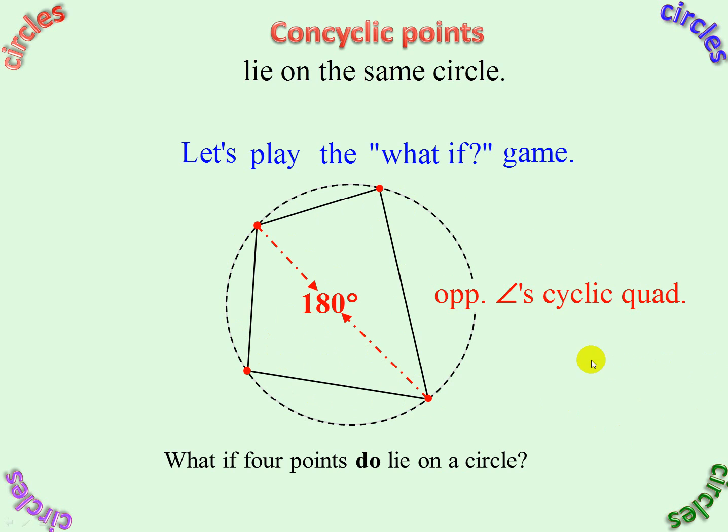Well, if you have a quadrilateral which isn't in a circle but whose opposite angles add up to 180 degrees, then it is cyclic, and the reason would be: Converse Opposite Angle Cyclic Quad.